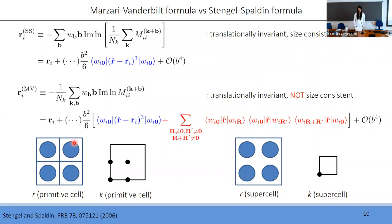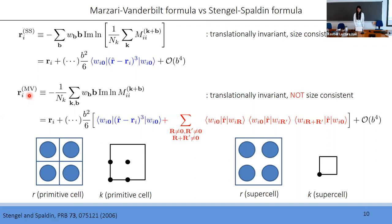For the Marzari-Vanderbilt formula, the result is very similar to Stengel-Spalding, with the only difference being an additional term that includes position matrix elements between a Wannier function and its periodic images. This additional term does not break translational invariance but does break size consistency — meaning a primitive cell calculation with some k-point sampling should give the same result as a corresponding supercell calculation with gamma-point sampling. Since only the Marzari-Vanderbilt formula is implemented in Wannier90, and our focus here is on translational invariance, I will use it in the following and leave Stengel-Spalding for a future study.